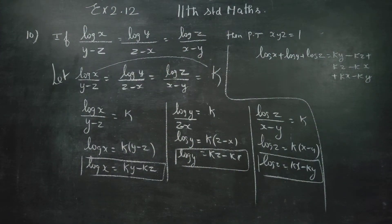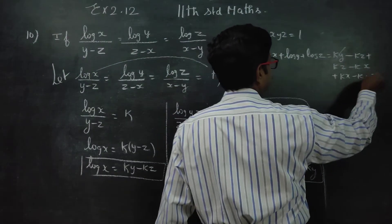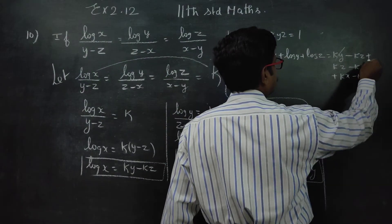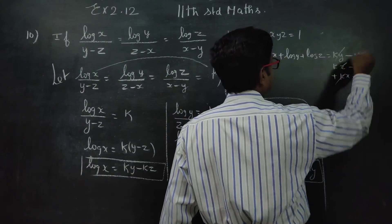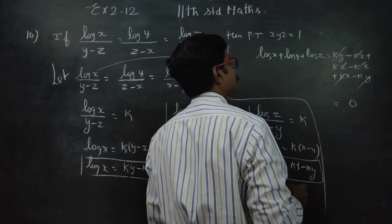The right-hand side becomes: (ky minus kz) plus (kz minus kx) plus (kx minus ky). All terms cancel — ky cancels with minus ky, kx cancels with minus kx, kz cancels with minus kz. Therefore, the sum equals 0.